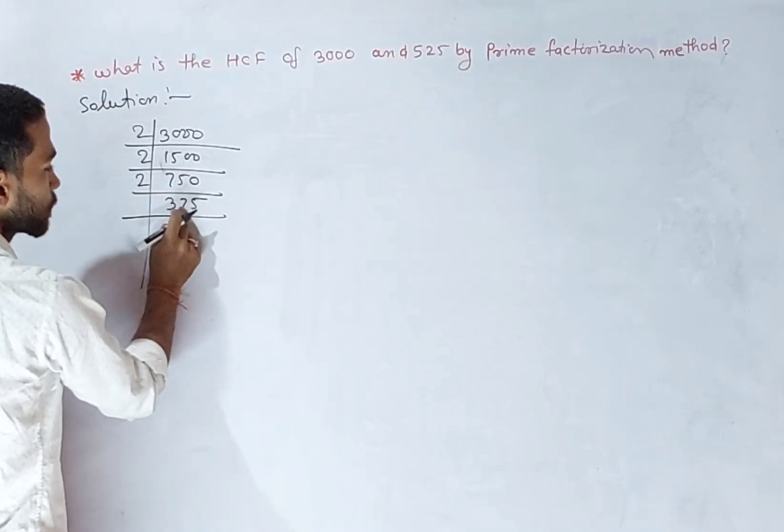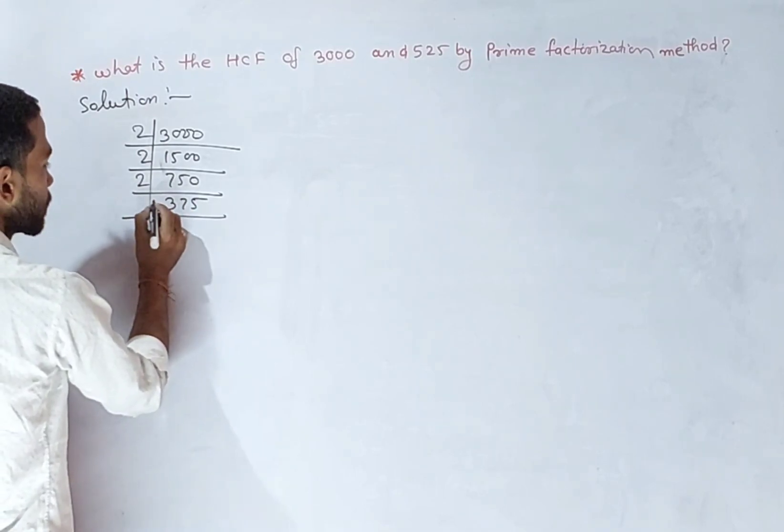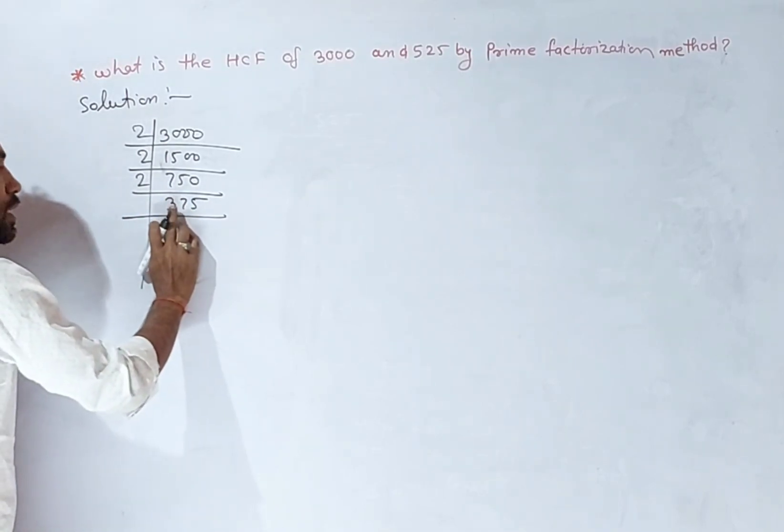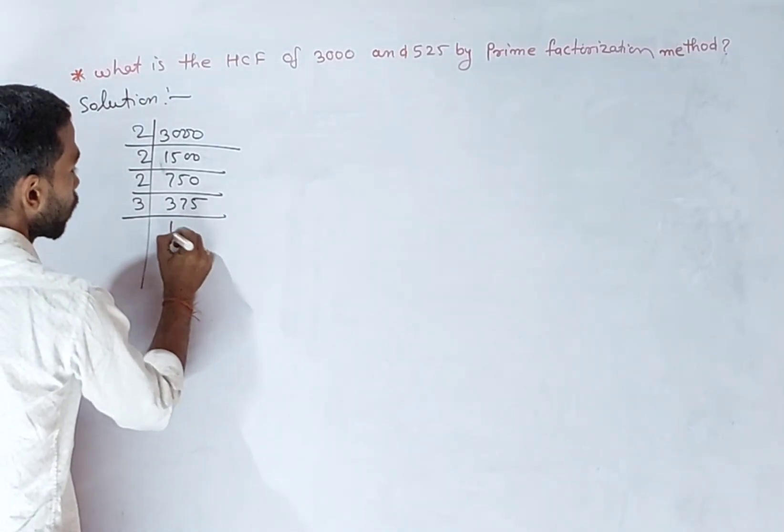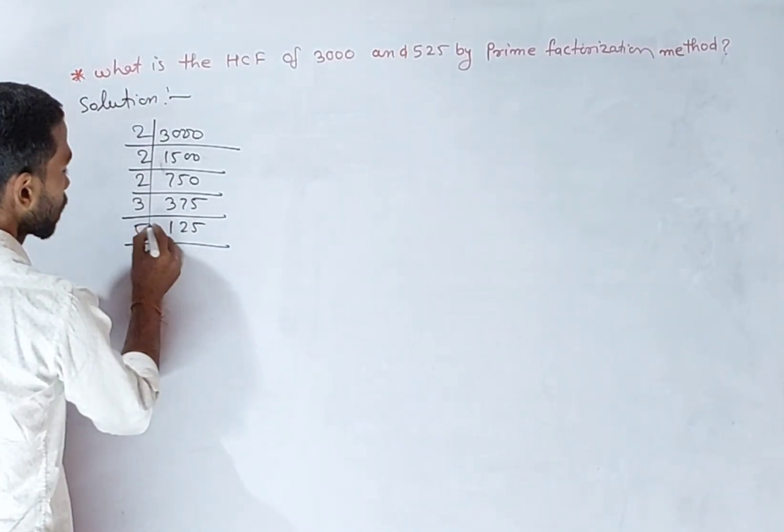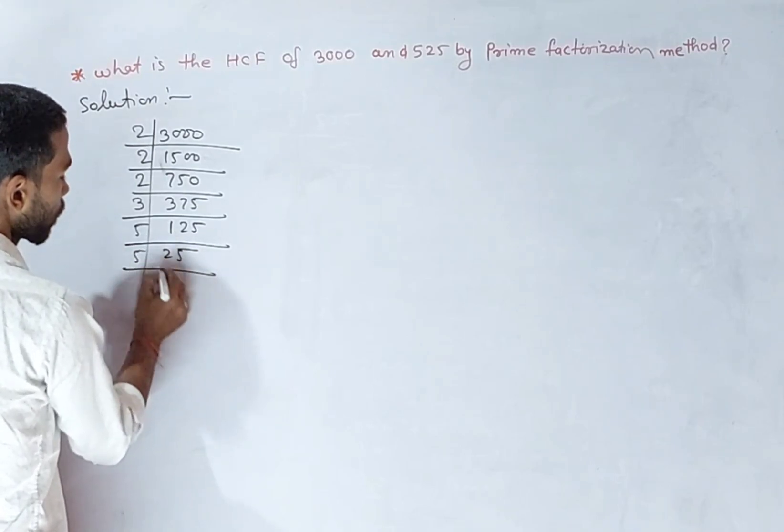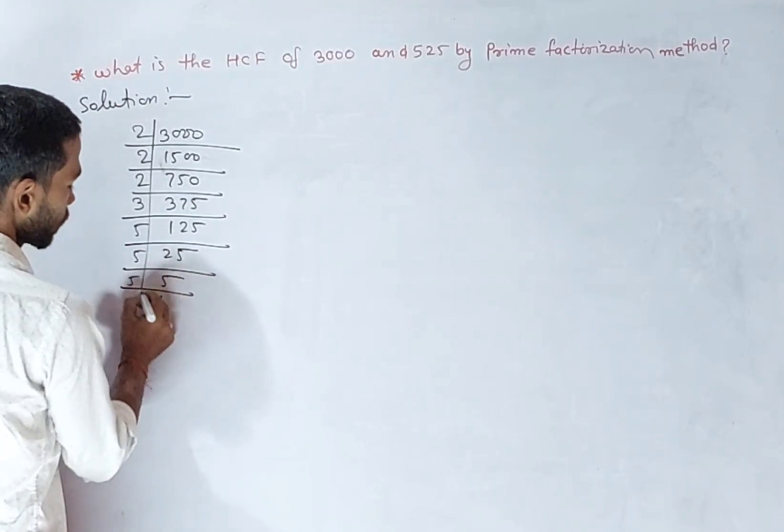7 plus 5, 12 plus 3, 15 is divisible by 3. So 375 is also divisible by 3, giving 125; divided by 5, 25; divided by 5, 5; divided by 5, 1.